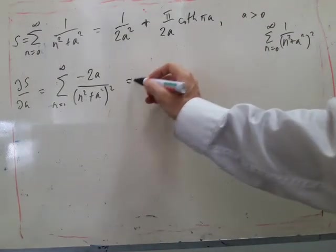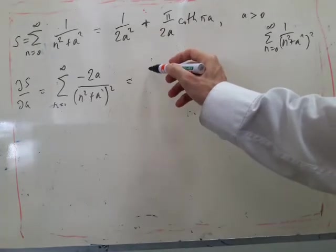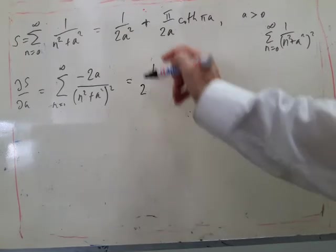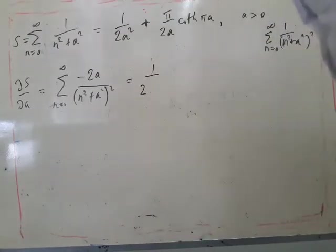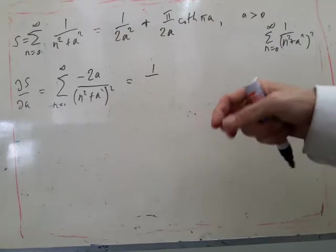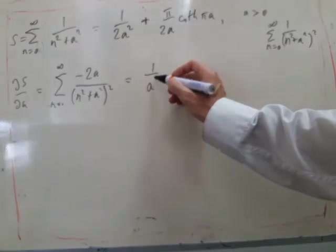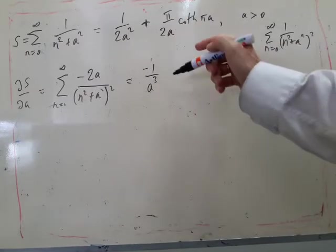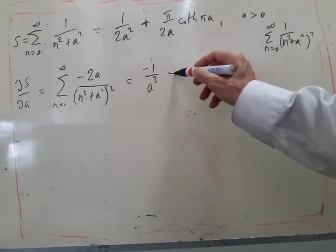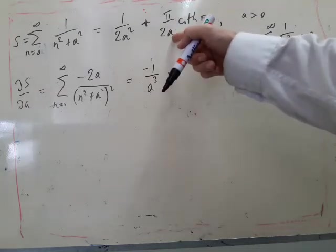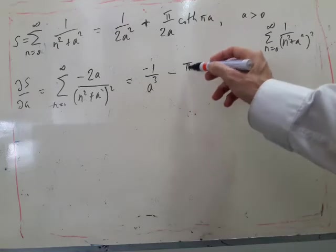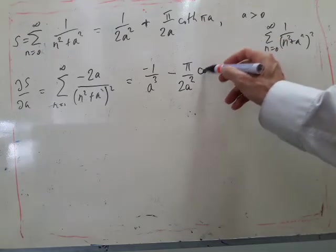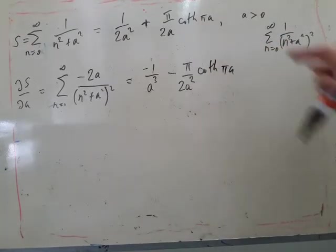And we end up with that, and then we just need to differentiate this. So differentiating this gives us minus 2 over A cubed, which cancels this 2, and A cubed on the bottom with a minus sign. Differentiating this gives us minus pi over 2A squared coth pi A.